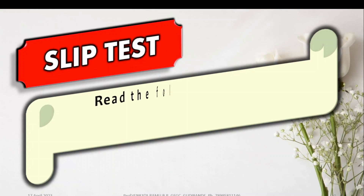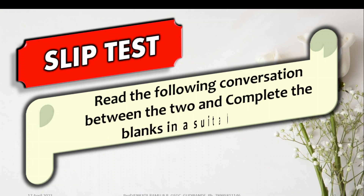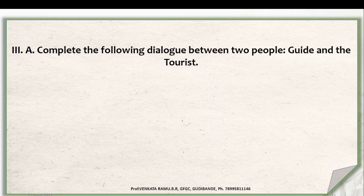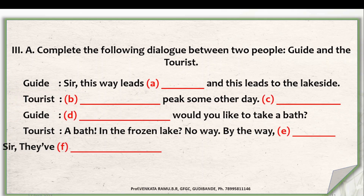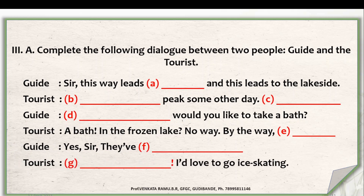Now let's come to the slip test. Please read the conversation and complete the blanks in a suitable way. The first example: complete the following dialogue between a guide and a tourist. Guide: 'Sir, this way leads [blank] and this way leads to the lakeside.' Tourist: '[blank] — peek some other day [blank].' Guide: '[blank] Would you like to take a bath?' Tourist: 'A bath in the frozen lake? No way!' Guide: 'By the way, [blank].' Guide: 'Yes sir, they have [blank].' Tourist: '[blank] I would love to go ice skating.'